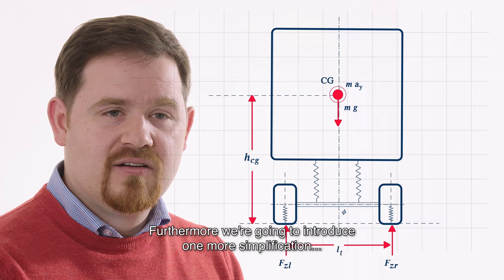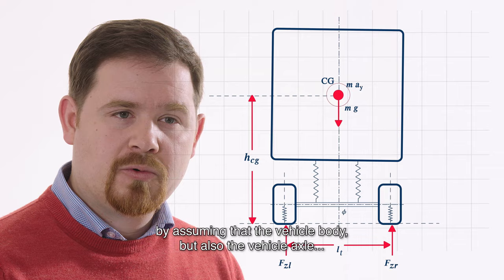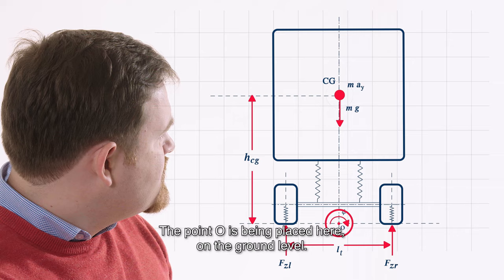Furthermore, we're gonna introduce one more simplification by assuming that the vehicle body but also vehicle axle are rotating around the point O. The point O is being placed here in the ground level.